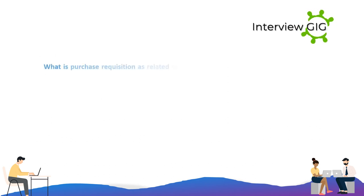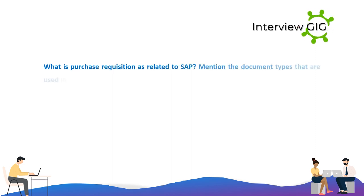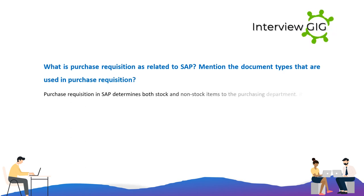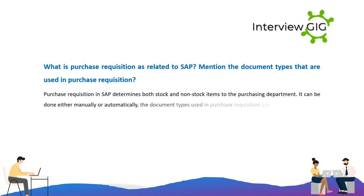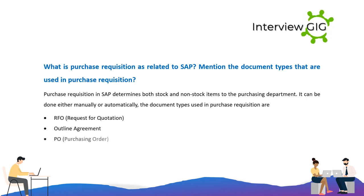What is a purchase requisition as related to SAP? Mention the document types used in purchase requisition. Purchase requisition in SAP determines both stock and non-stock items to the purchasing department; it can be done either manually or automatically. The document types used in purchase requisition are: RFQ (Request for Quotation), Outline Agreement, and PO (Purchase Order).